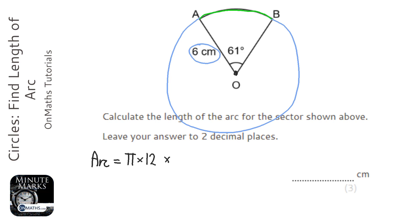Then we need to times it by the fraction of the circle we have. Now, we've been told that we've got 61 degrees, and in total there are 360 degrees. So as a fraction, that is going to be 61 over 360.